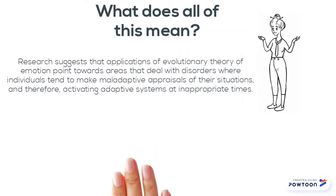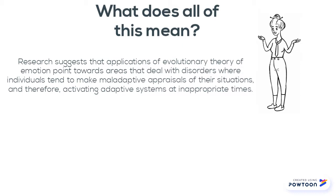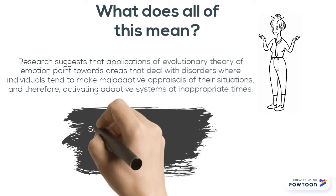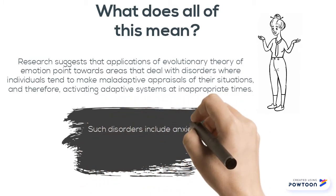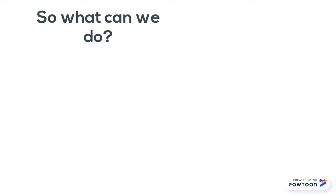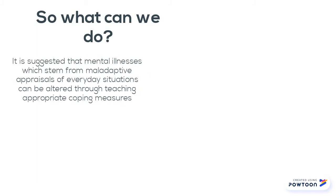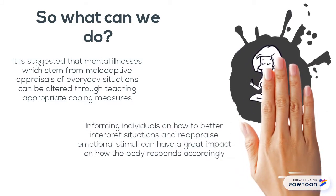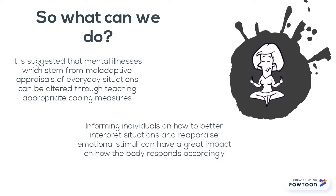Application of evolutionary theory of emotion can be used in areas that deal with disorders in which individuals tend to make maladaptive appraisals of their situations, therefore activating adaptive systems at inappropriate times. Such disorders include anxiety, phobias, and depression. It is suggested that mental illnesses which stem from maladaptive appraisals of everyday situations can be altered through teaching appropriate coping measures. Informing individuals on how to better interpret situations and reappraise emotional stimuli can have a great impact on how the body responds accordingly.